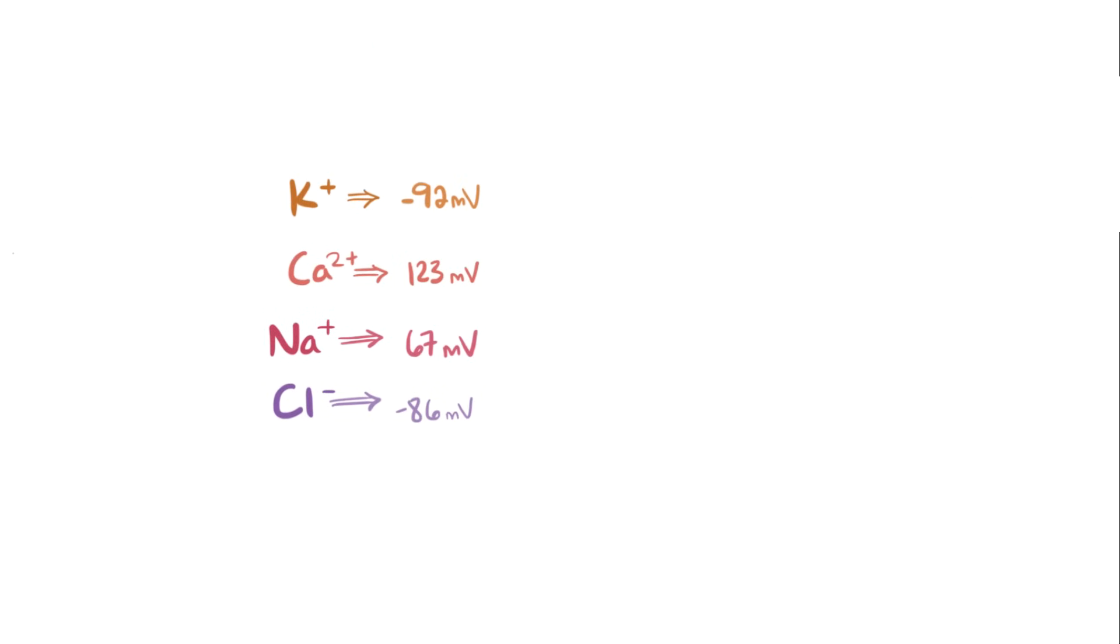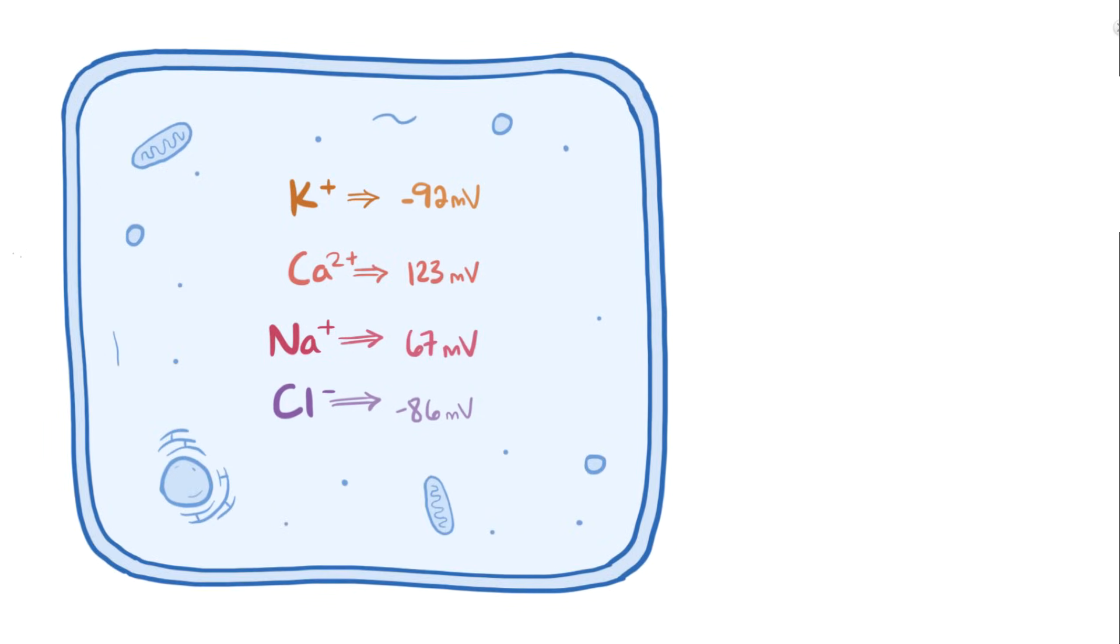These all represent the charge in the cell needed to balance the movement of each of these ions based on the concentration gradients. And to make it clear, the concentration gradients themselves are potassium moving out, calcium moving in, sodium moving in, and chloride moving in, since remember there's low concentration of potassium outside the cell but high concentration of calcium, sodium, and chloride outside the cell, and concentration gradients move from high concentration to low concentration.